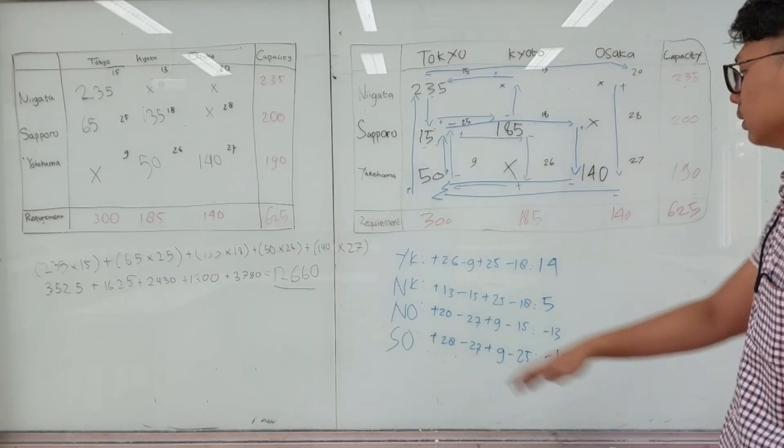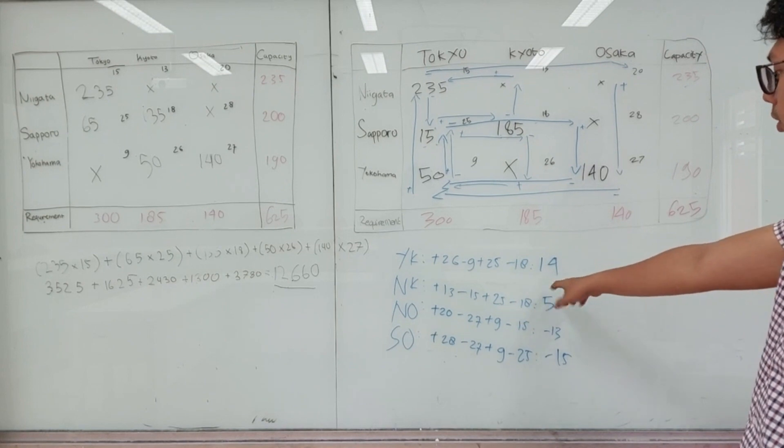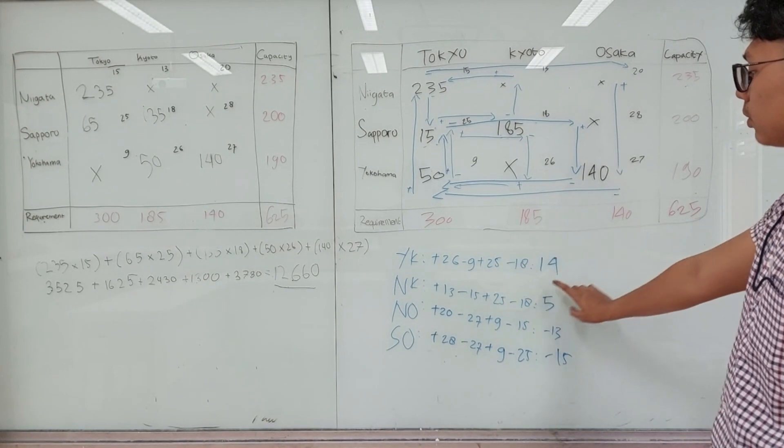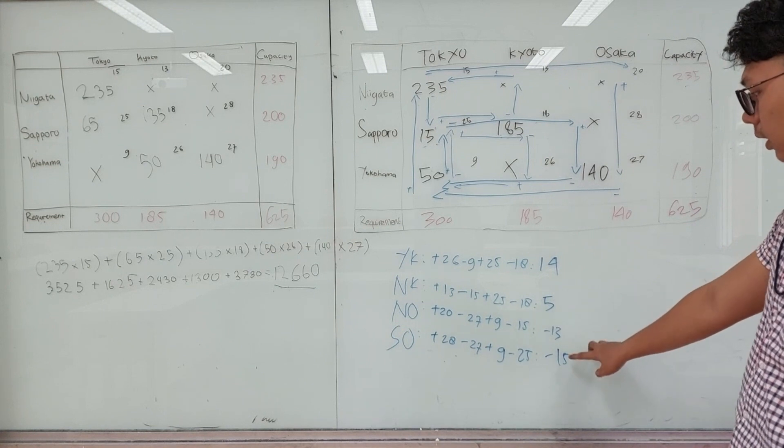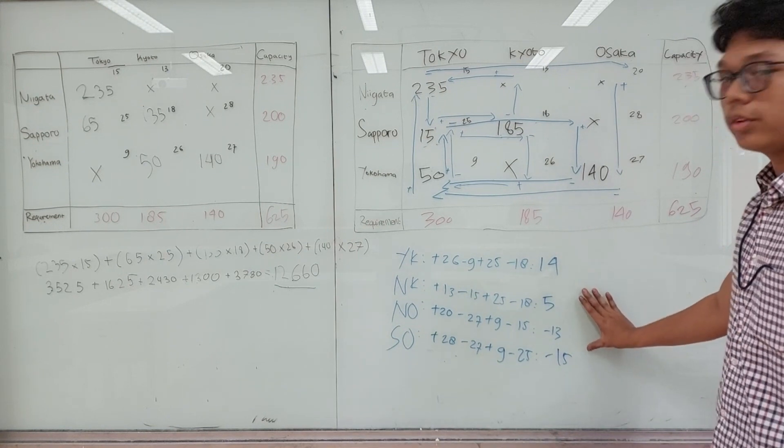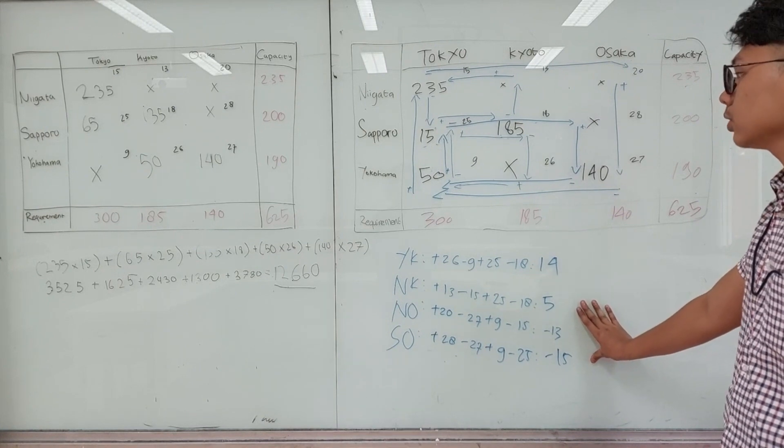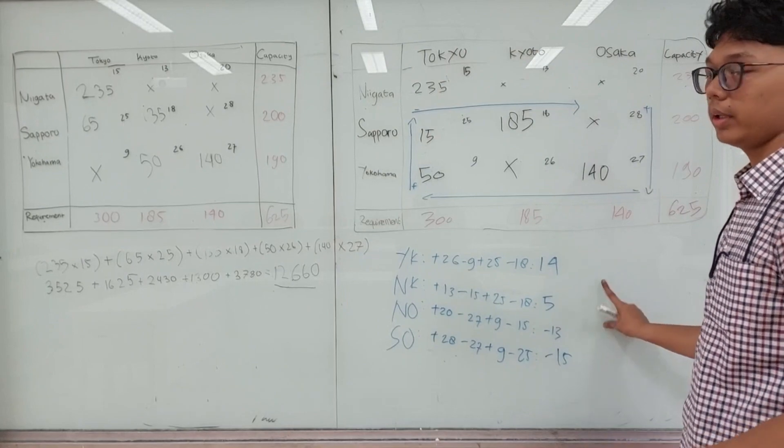After we find the addition and subtraction, we must calculate. We got YK is 14, MK is 5, NO is minus 13, and SO is minus 15. We need all of them to be positive, so we need to calculate again and again after we find this value.